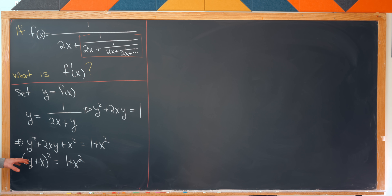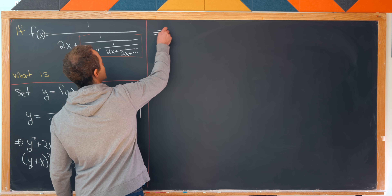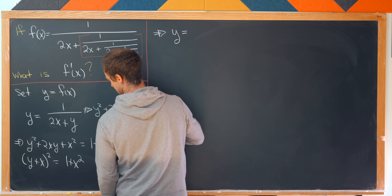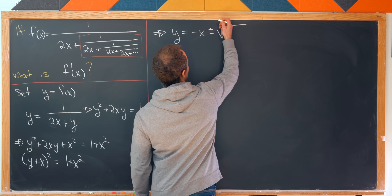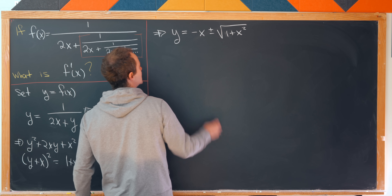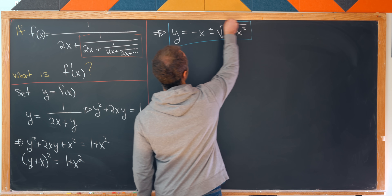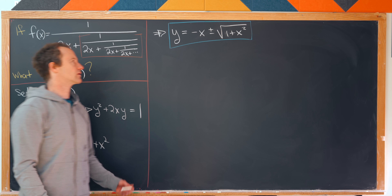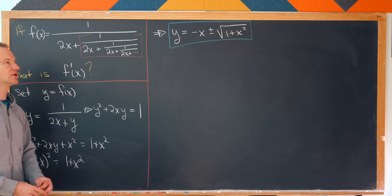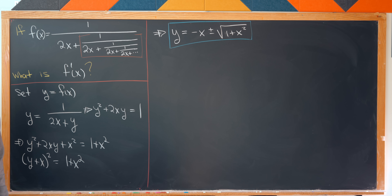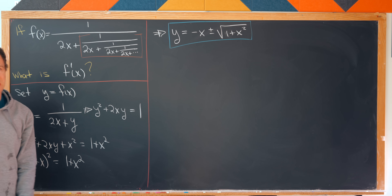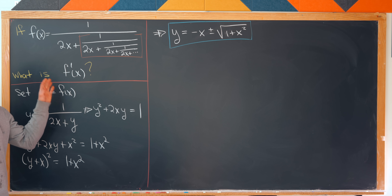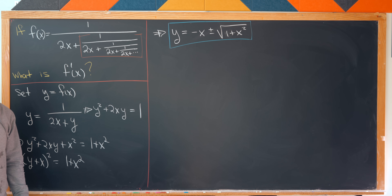Taking the square root of both sides and solving for y gives the formula y = −x ± √(1 + x²). You might note that the ± is ambiguous — which sign does y take? That depends on the input x: sometimes it takes the positive value in front of the square root, sometimes the negative. But we won't worry too much about that since this is just an intermediate step.